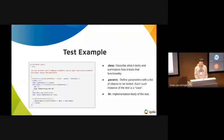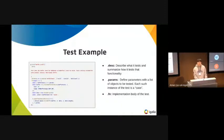This is a simple test for checking write buffer validations. Basically, the general test consists of three blocks. DESC describes what it tests and summarizes how it tests the functionality. Params defines a parameter with a list of objects to be tested. FN is the implementation body of the test.